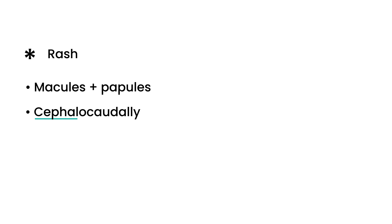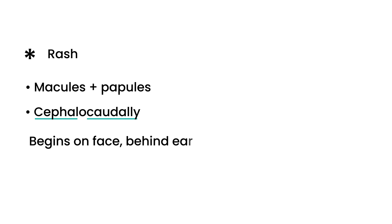The rash starts at the head — cephalo — and spreads down to the body. It begins on the face and behind the ears, and then spreads downward toward the trunk and extremities. So the distribution and the way it spreads is important.